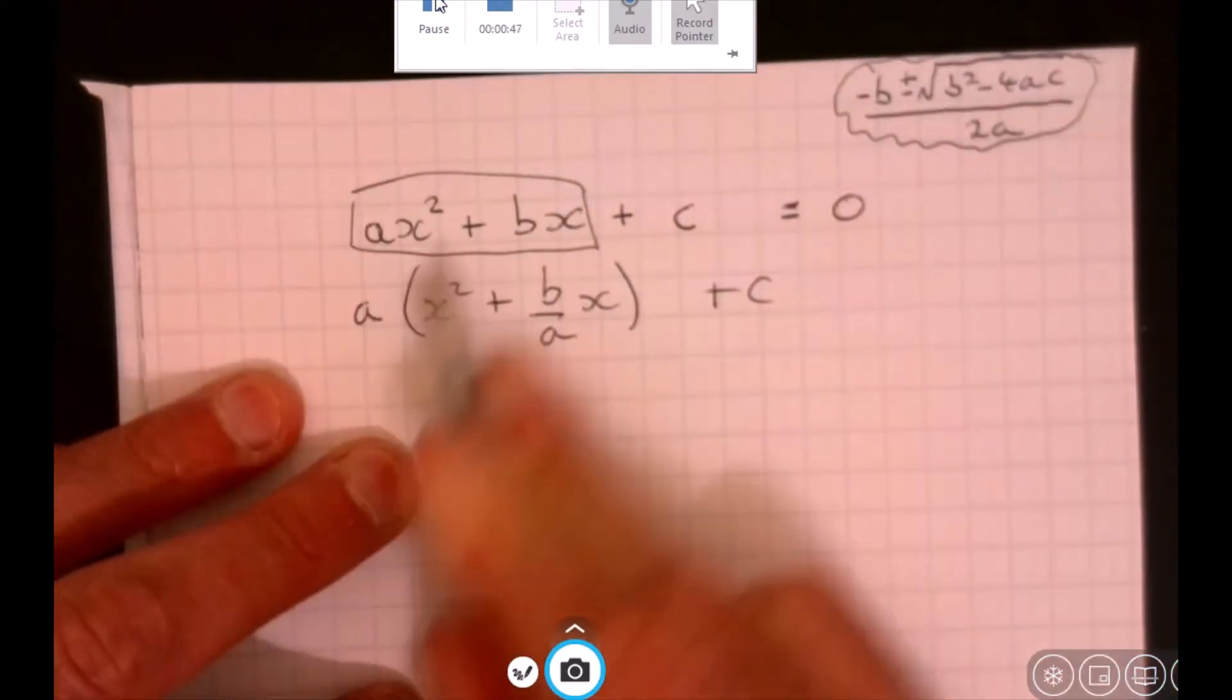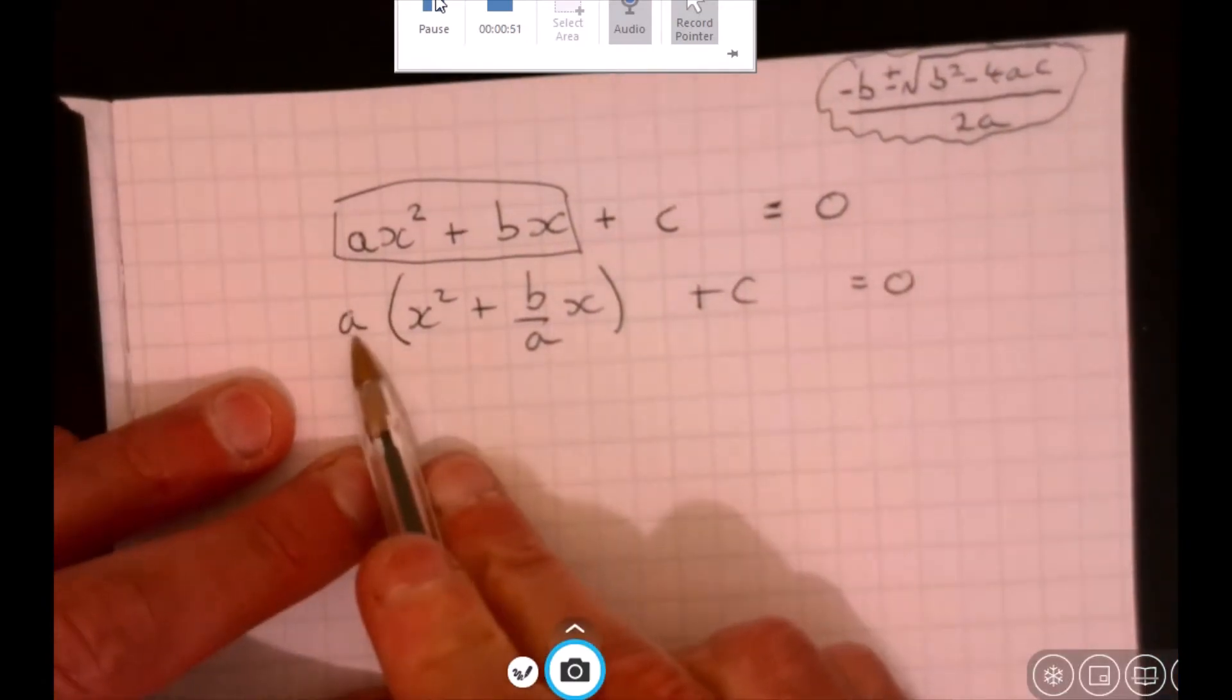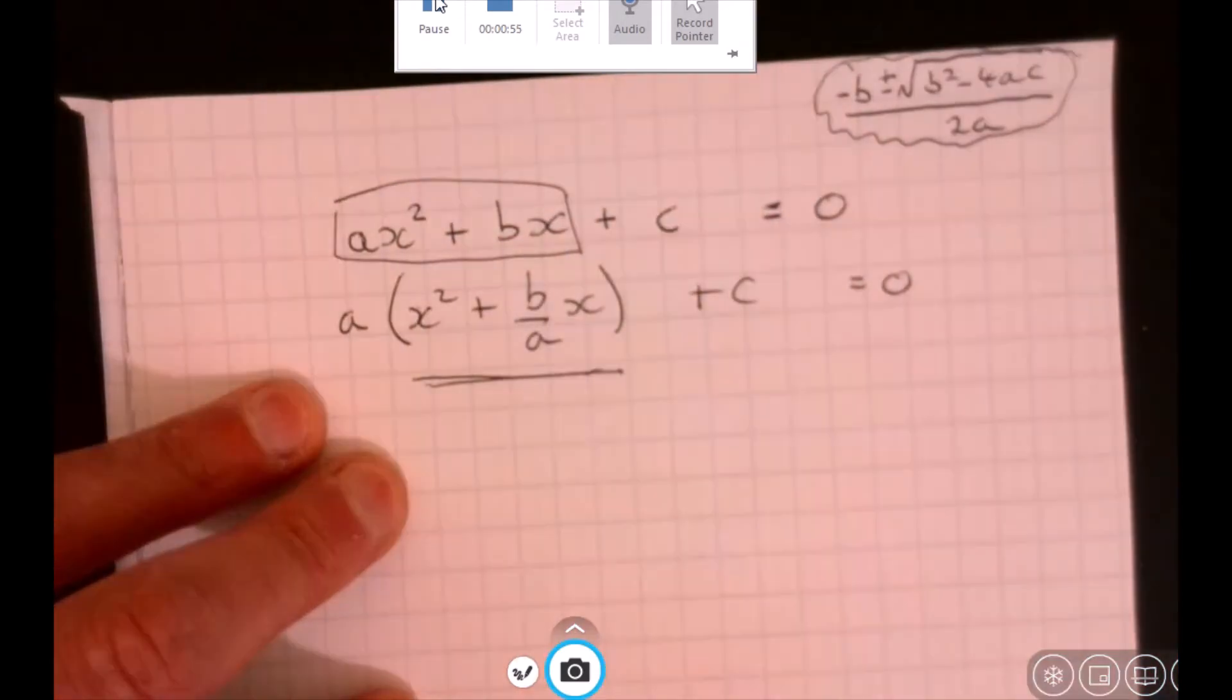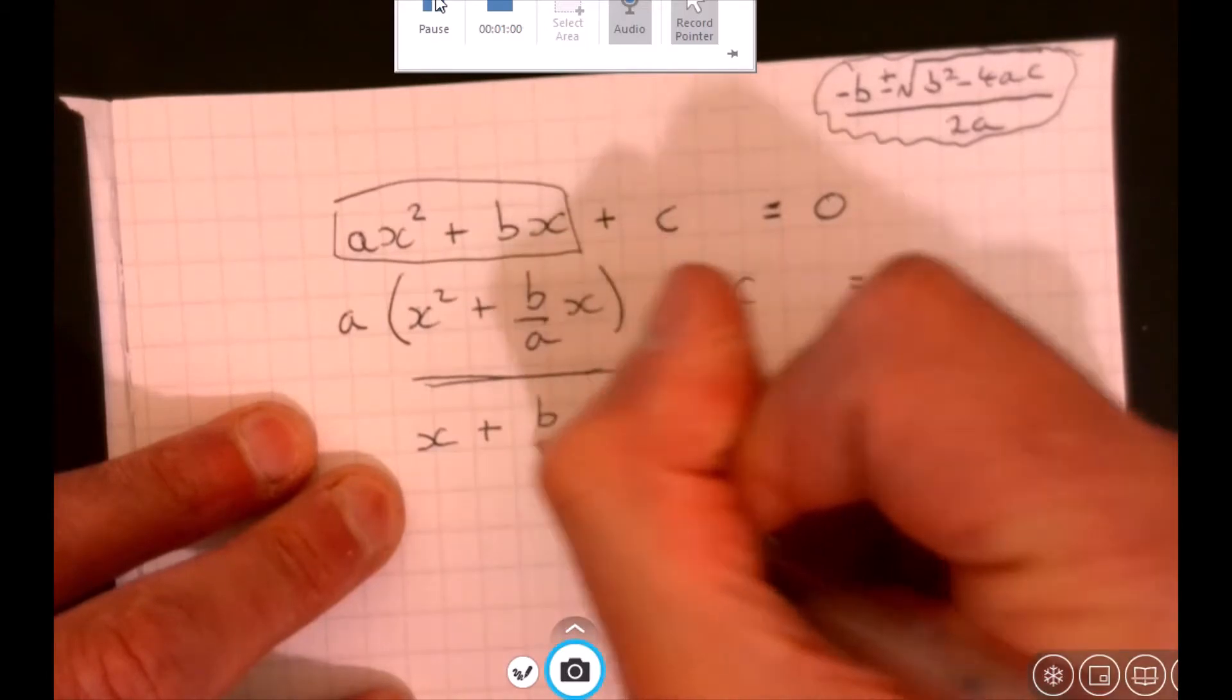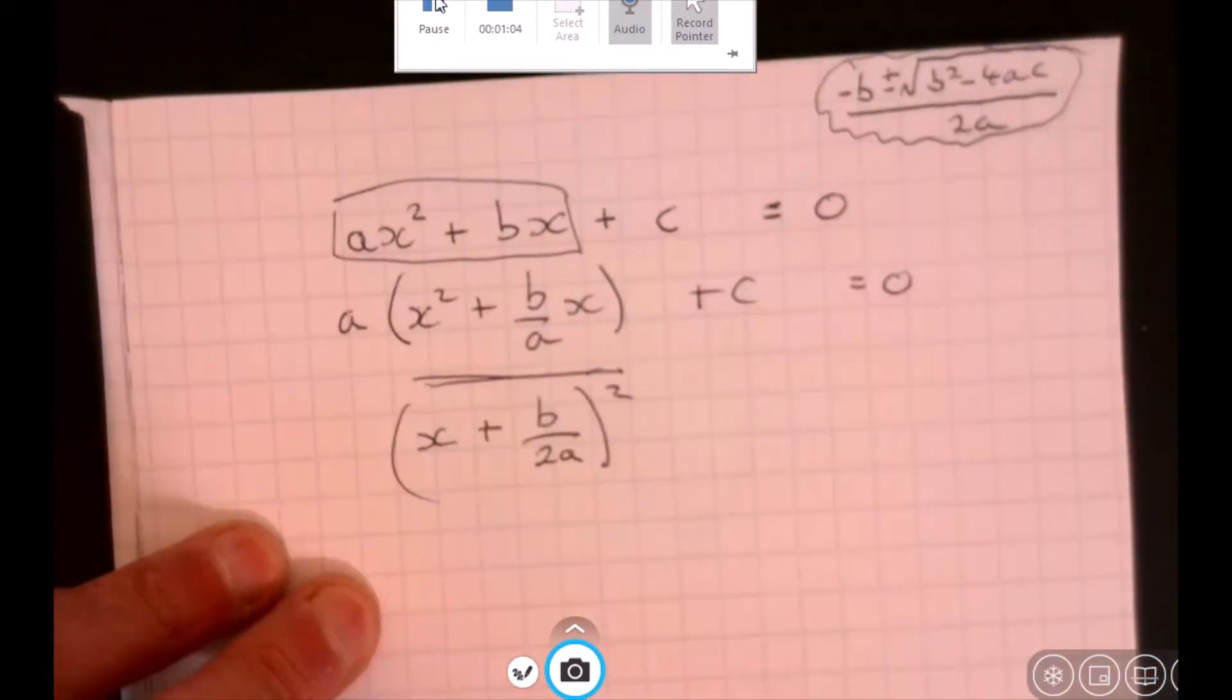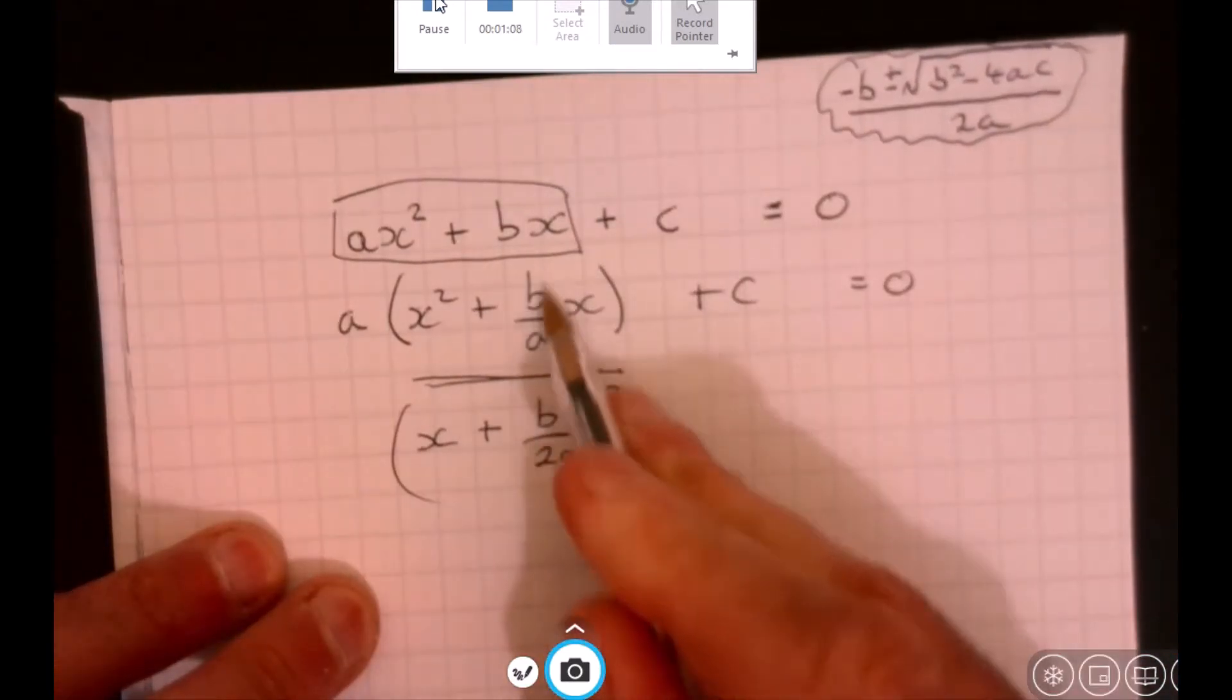What are we doing then? Well, let's now think about how do we rewrite this bit here. Remember we half this, so we can have x plus b over 2a squared, and then we've got to take away the excess.